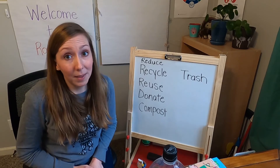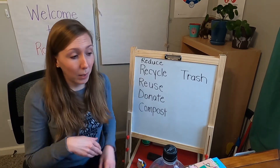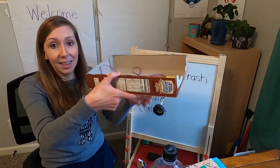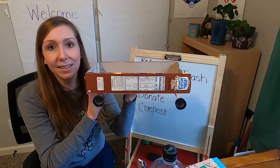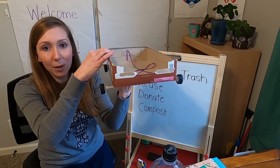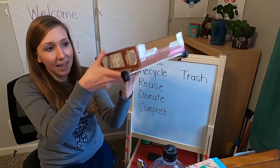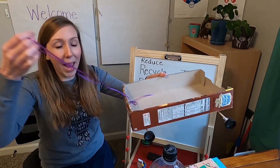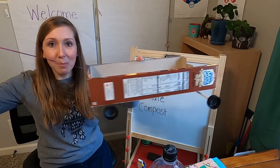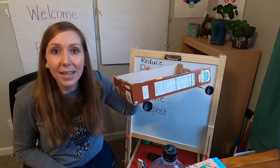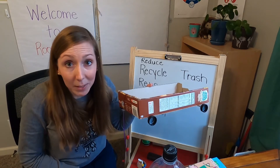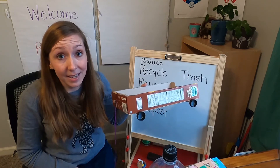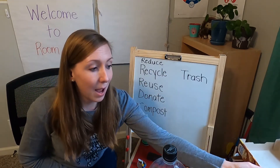I want to show you one more thing I reused instead of throwing away. If you've watched some of my other videos, you may have seen this — I took a cereal box and turned it into a car. I added some wheels and axles down at the bottom, and now I have a car or wagon that I can put things in and pull around. It is so fun to build with recycled materials — you can do so many fun things to keep things out of the earth.